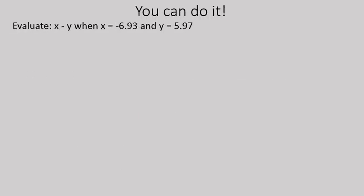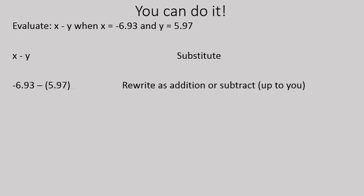Let's do another one where we actually substitute values into an equation. x minus y, when x is equal to negative 6.93 and y is equal to positive 5.97. You can pause this recording and try the questions out yourself — you can pause, try it out, and then watch how I solve it. I'm going to start out by substituting: my x value is negative 6.93 and my y value is positive 5.97.